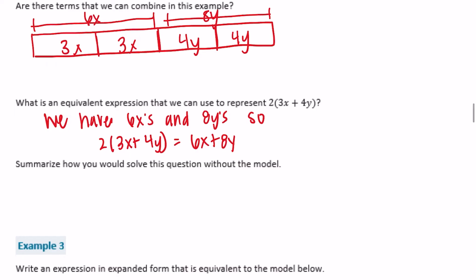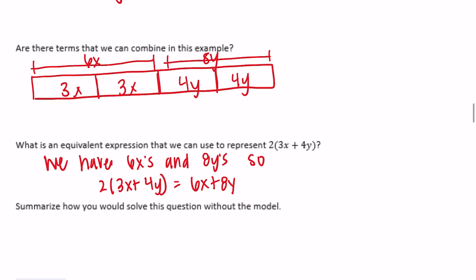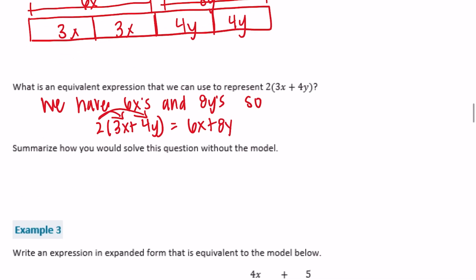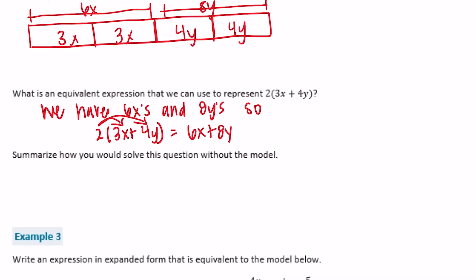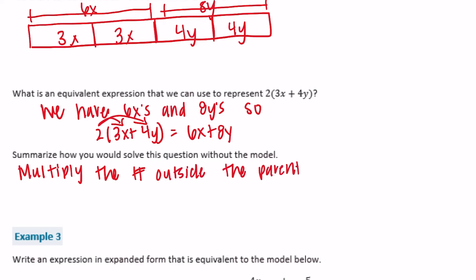To summarize how to solve without a model: when there is a number outside the parentheses, you can distribute it to what is inside — multiply the number outside the parentheses by each term on the inside.